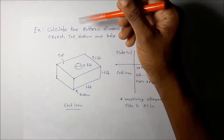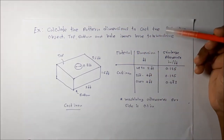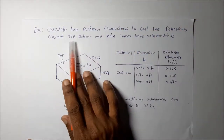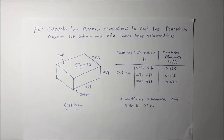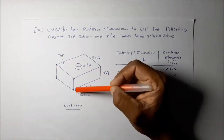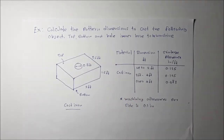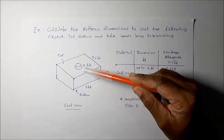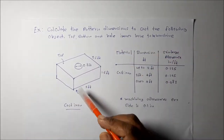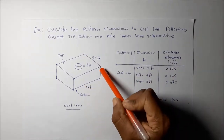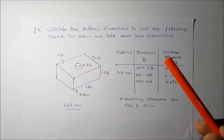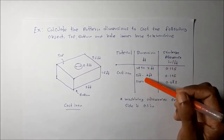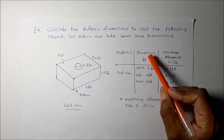In this problem, we calculate the pattern dimensions to cast an object. The conditions are that the top surface, bottom surface, and inner hole surface have to be machined. The given data: material is cast iron, dimensions are — length 5 feet, height 1.5 feet, hole diameter 0.8 feet, and width 3.5 feet.